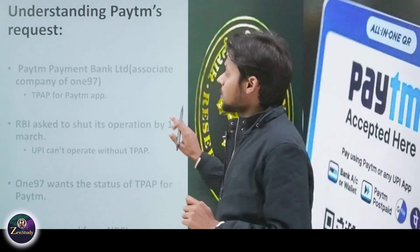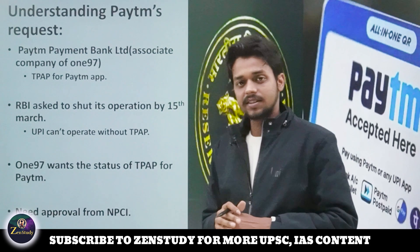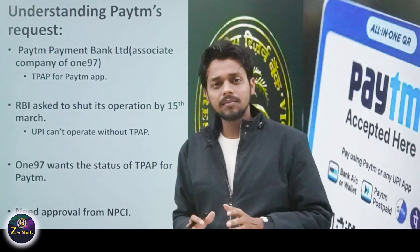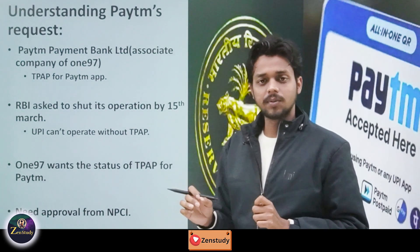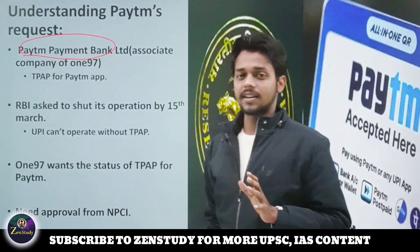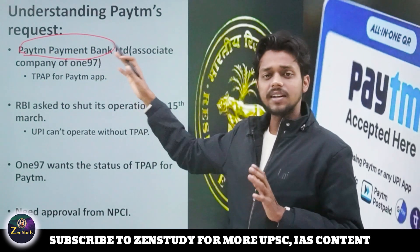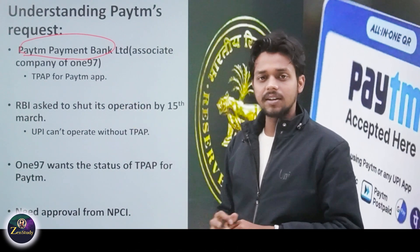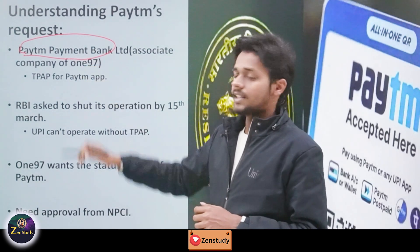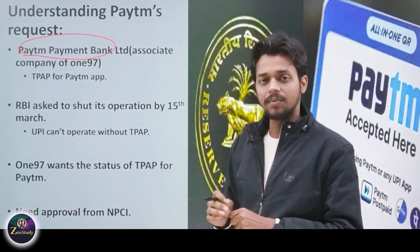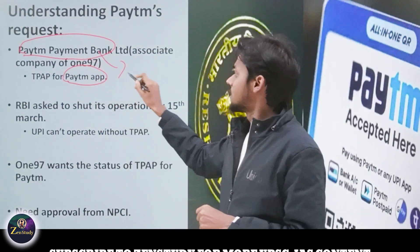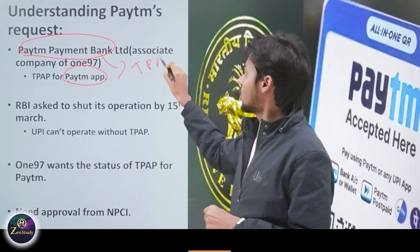Now we understand why Paytm has requested the NPCI. Basically, the Paytm app was using a Third Party Application Provider — it was Paytm Payment Bank, an associate company of 197 Communication Limited, which is the parent company. They were using Paytm Payment Bank Limited (PPBL) for their UPI transactions through the Paytm app, so PPBL was acting as the TPAP for Paytm.